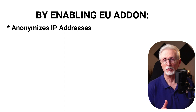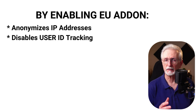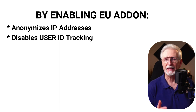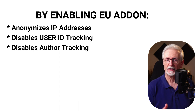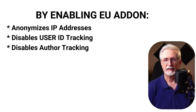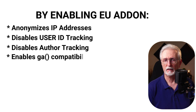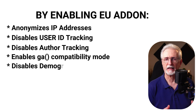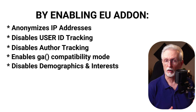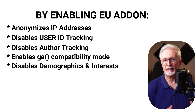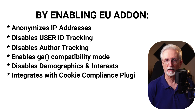The MonsterInsights EU Compliance add-on automatically anonymizes IP addresses on all hits in Google Analytics, eCommerce, and form tracking. It disables user ID tracking on hits in Google Analytics, eCommerce, form tracking, and the user ID dimension in the custom dimensions add-on. It also disables author tracking in the custom dimensions add-on, enables compatibility mode, and disables the demographics and interest reports for remarketing and advertising tracking.